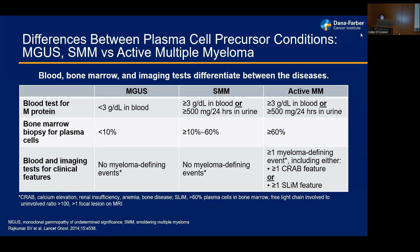What is the definition of these plasma cell precursor conditions? MGUS, or monoclonal gammopathy of undetermined significance, smoldering myeloma versus active myeloma. The key point for these two precursor conditions is the absence of a myeloma-defining event — typically the presence of bone lesions, lowered blood counts, high calcium, or kidney dysfunction.